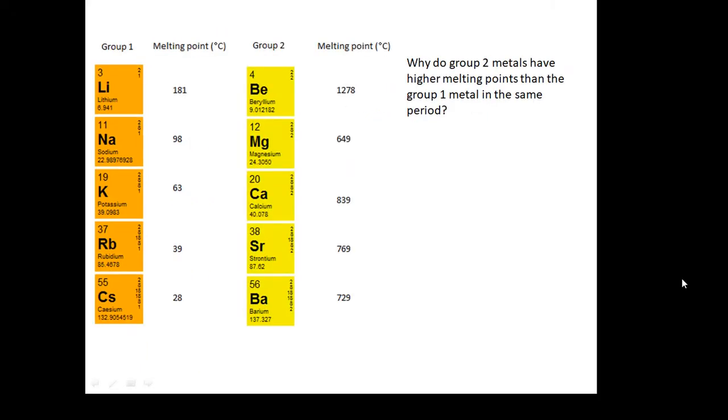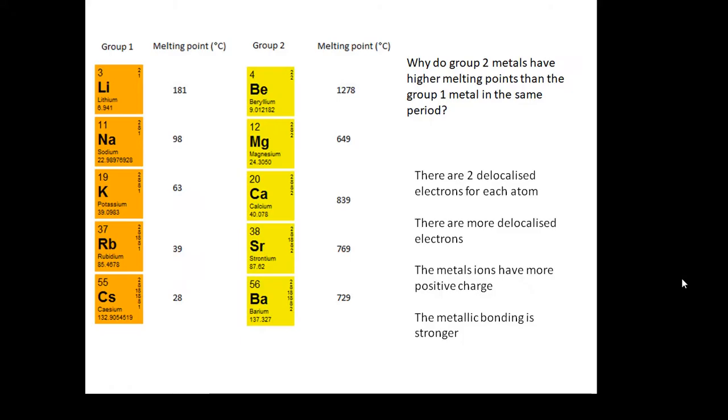Now look at this—Group 1 and Group 2. If you look at the melting points of Group 1 compared to Group 2, clearly Group 2 has a higher melting point. Why do Group 2 metals have a higher melting point compared with elements in the same period? We have two delocalized electrons for every atom. If there's more delocalized electrons, then there's more super glue holding it together. Also, the metal ions have more positive charge. A magnesium nucleus has got one more proton than sodium, so it's got a bigger positive charge. The metallic bonding will be stronger—there are more free electrons and the nuclei has more charge. So the melting point will be higher.